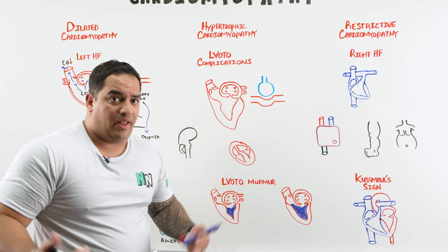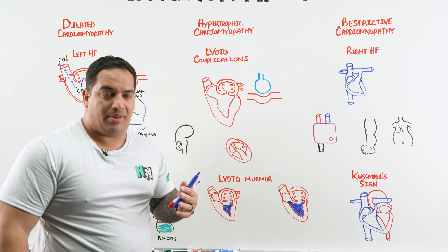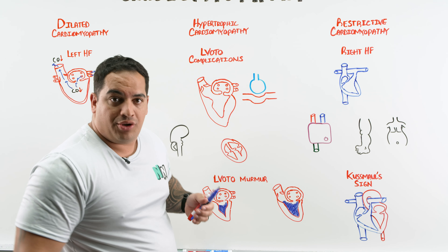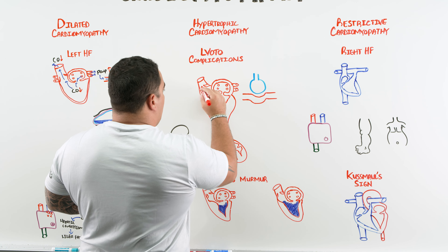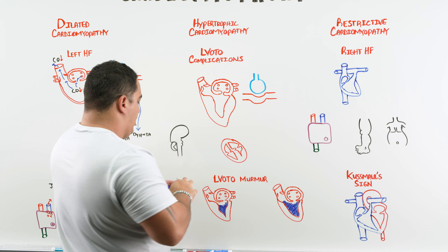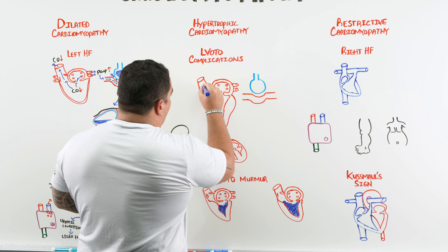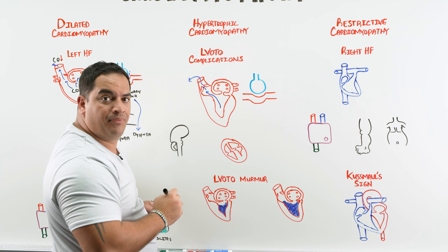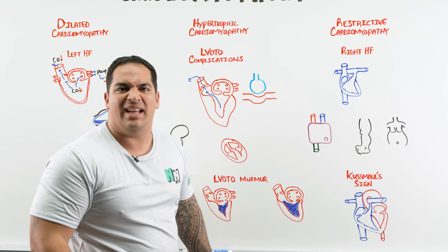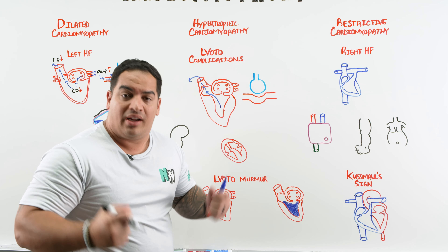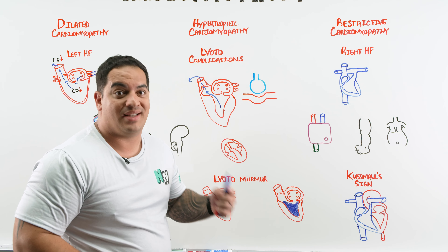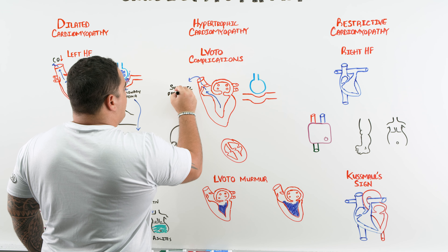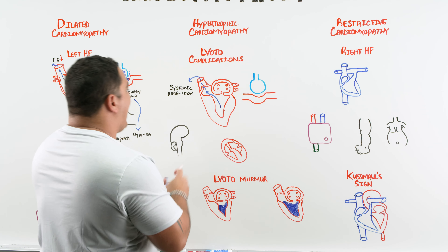Moving to hypertrophic cardiomyopathy: remember the left ventricular outflow tract obstruction from the bulging septum. That LVOTO leads to poor systemic perfusion. This is especially bad in certain states — when the patient is dehydrated, or when their heart rate or contractility is very high, making the obstruction significantly worse.